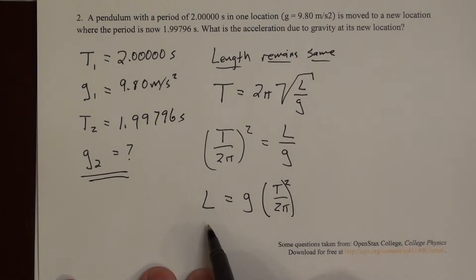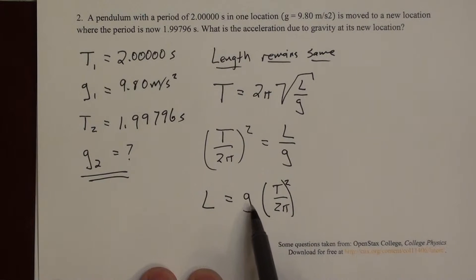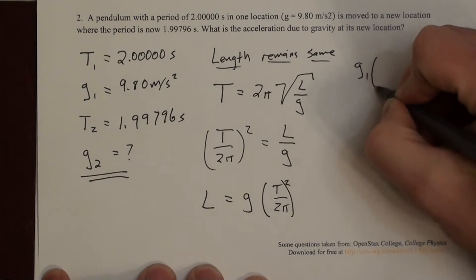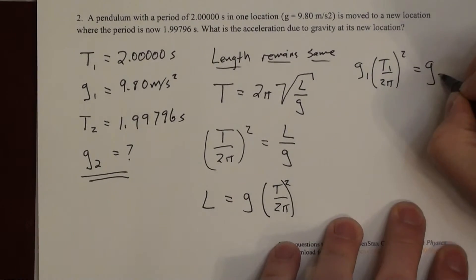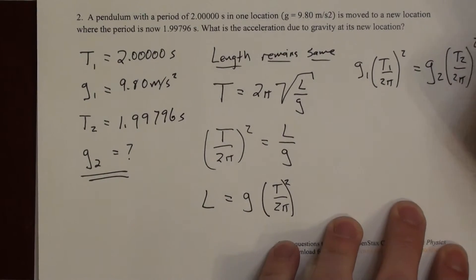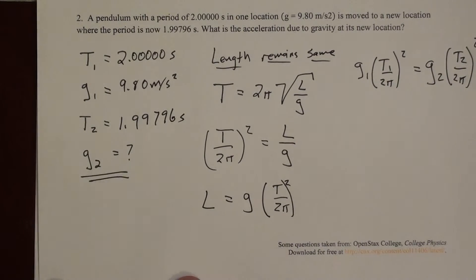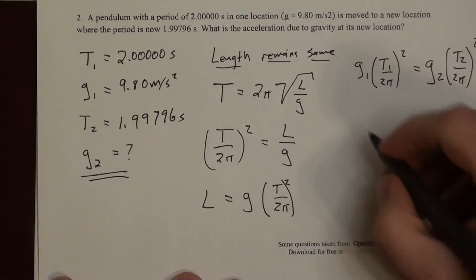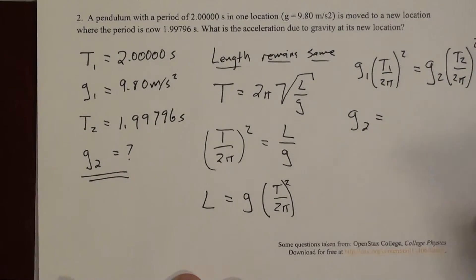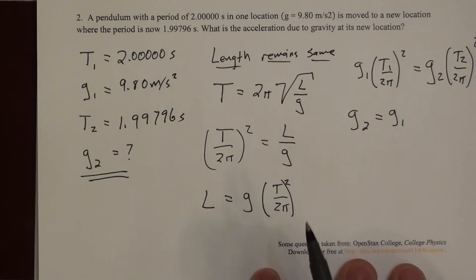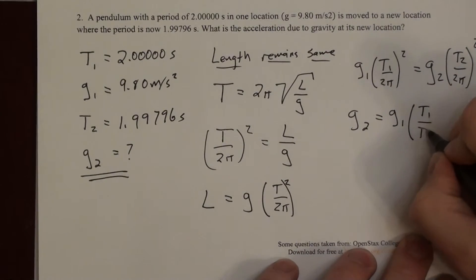Instead of finding a numerical value for l, I'll set length equal to length: g₁(t₁/2π)² = g₂(t₂/2π)². The 2π squared appears on both sides and cancels out. Solving for g₂: g₂ = g₁ × (t₁/t₂)².